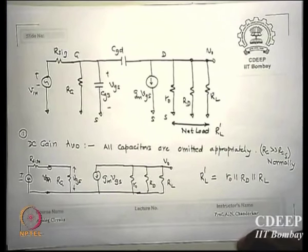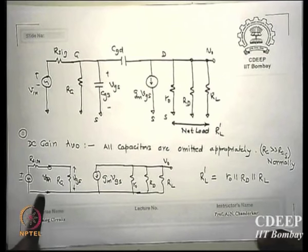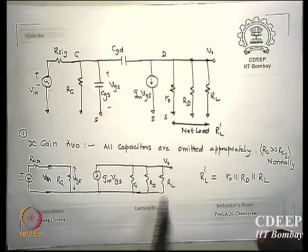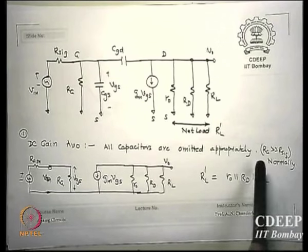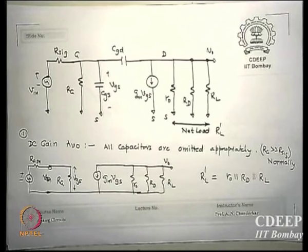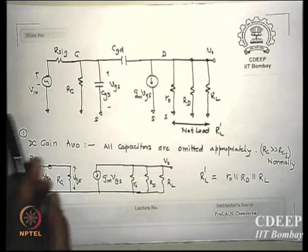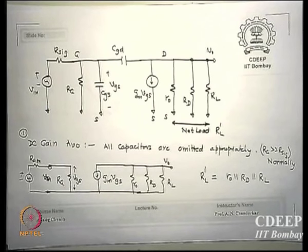If I now calculate the DC gain — which means remove all capacitances — I get the circuit with R_signal, RG, GM·VGS, R0, Rd, and RL'. Then AV0 = −GM × RL'. If RG is much larger than R_signal, the VGS ≈ VIN, and we can sometimes neglect R_signal in series with RG.